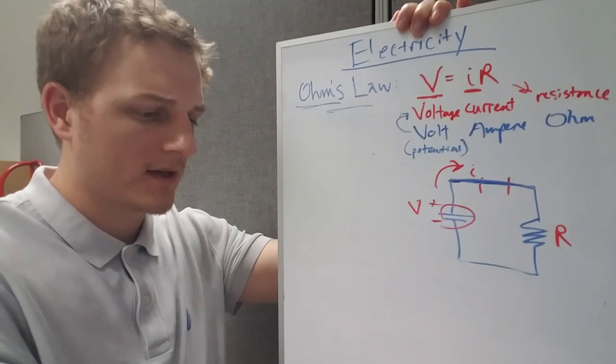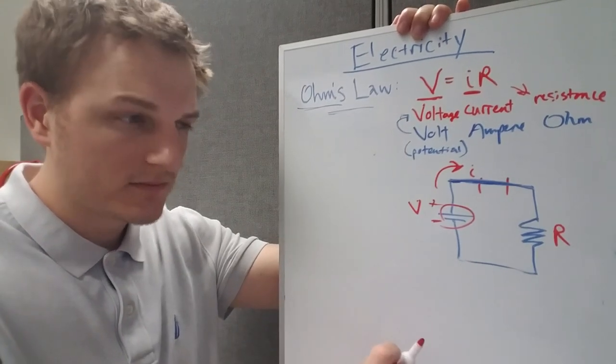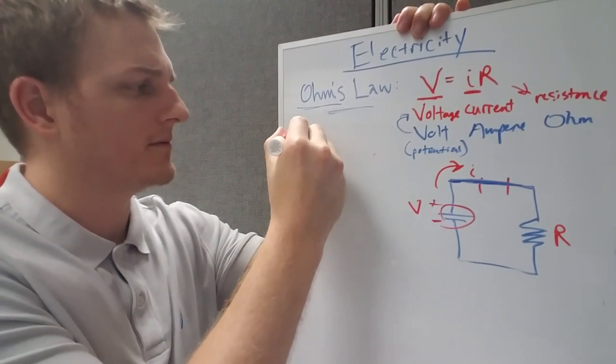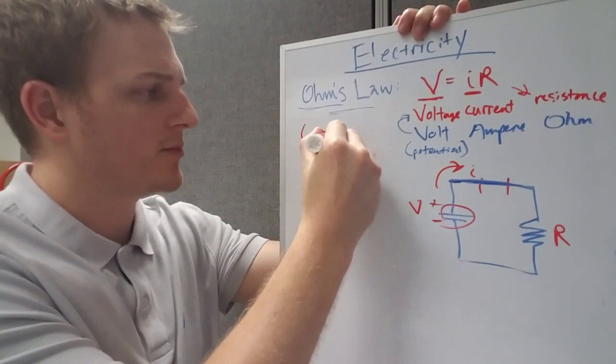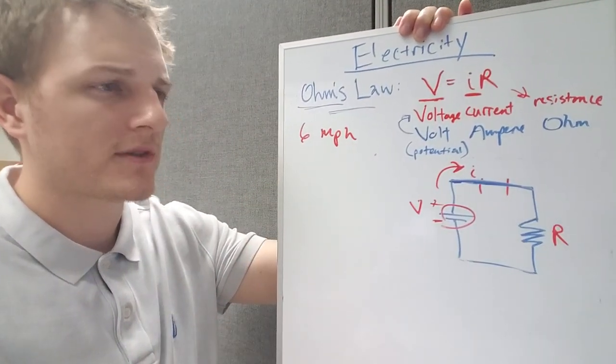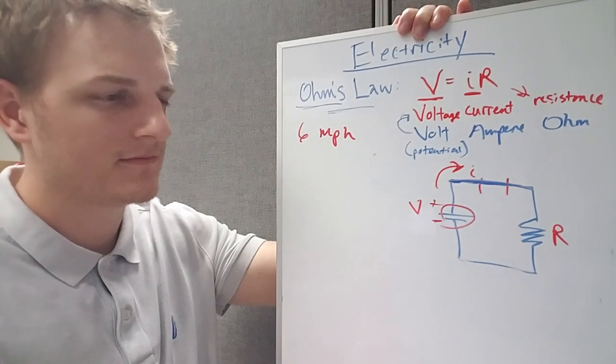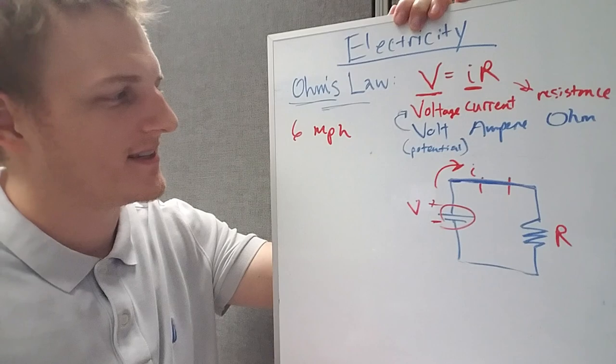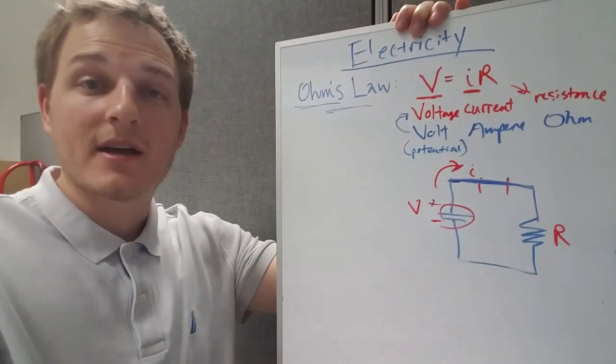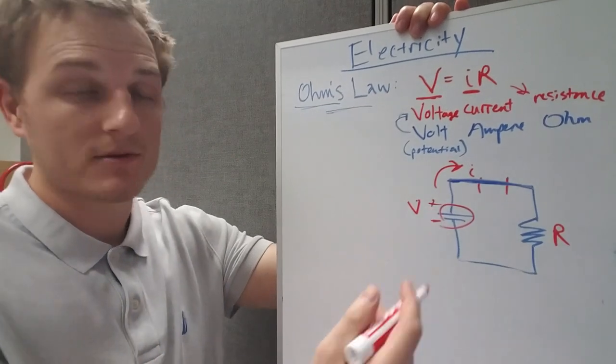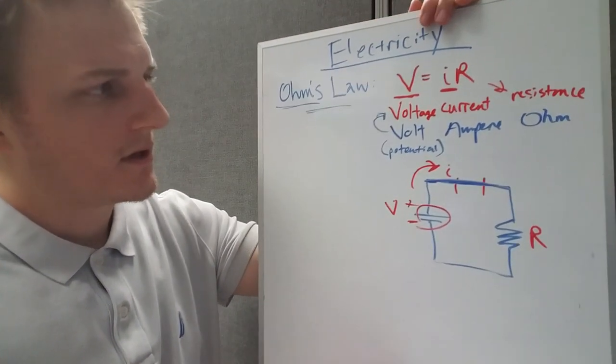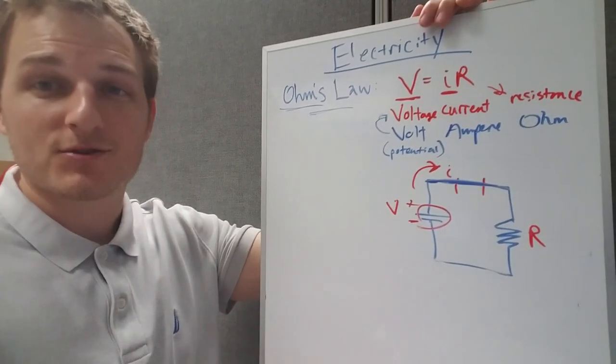So think of amps as almost like the equivalent of velocity - it's like you're going six miles per hour, that's you go six miles every hour. I guess that's not the best analogy, but it's the unit that is most frequently used in talking about electricity and how it flows.